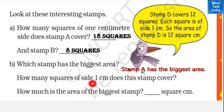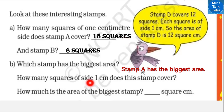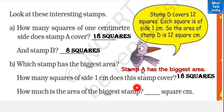How many squares of side 1 centimeter does the biggest stamp cover? Stamp A has 18 squares of side 1 centimeter. So the area of the biggest stamp — stamp A — is 18 square centimeters.